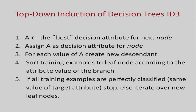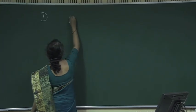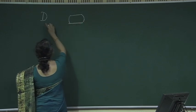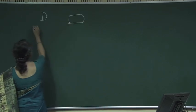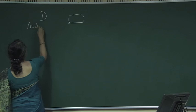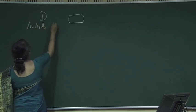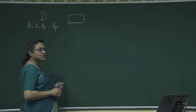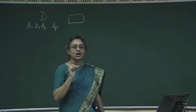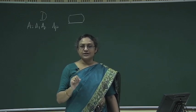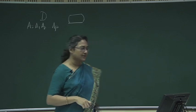We start with a number of training examples; let us say D is the set of training examples. Now, we want to decide a test for the root node of the decision tree. Suppose A is the set of attributes and there are p attributes. We want to find one of the attributes based on which we will make a decision at the root node.